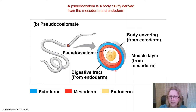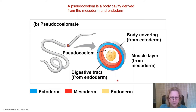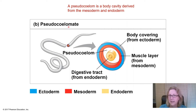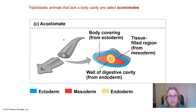There is another type: pseudocoelomates. They have mesoderm and are triploblastic, but don't have a true coelom because it's not surrounded on both sides by mesoderm. They still get many of the advantages of having a coelom, though — perhaps 'partial coelomates' would be a more accurate name.